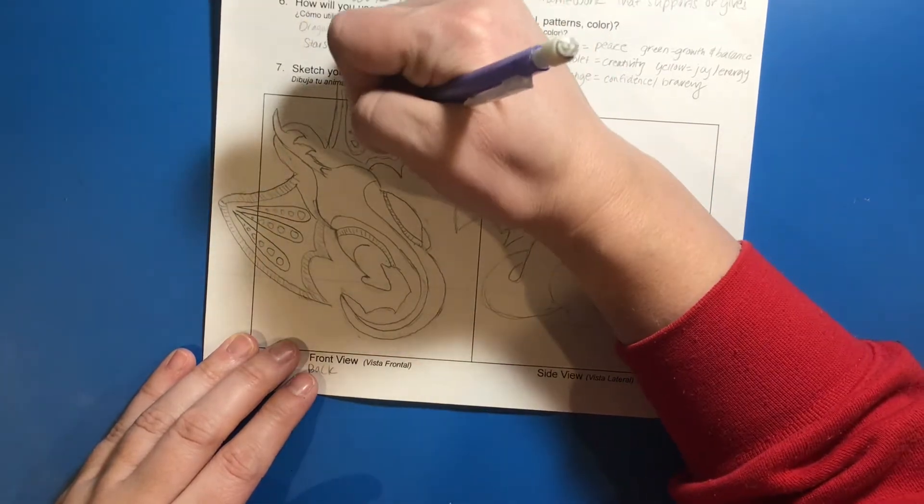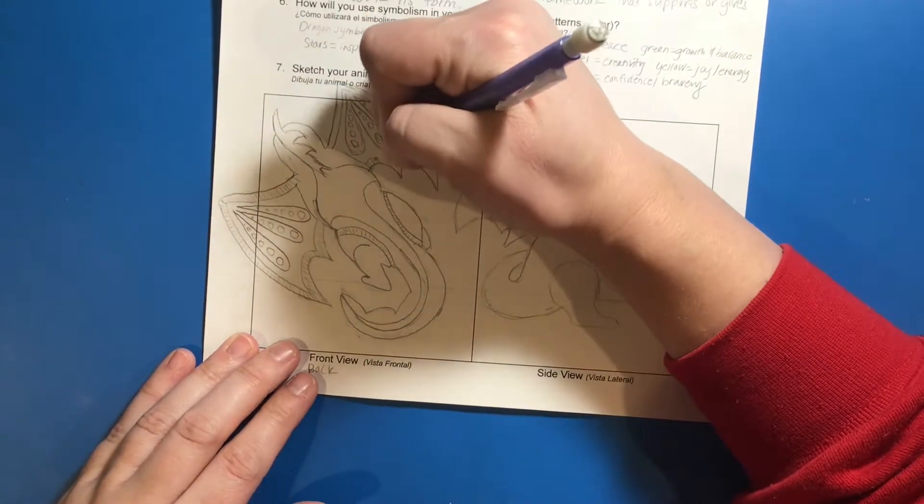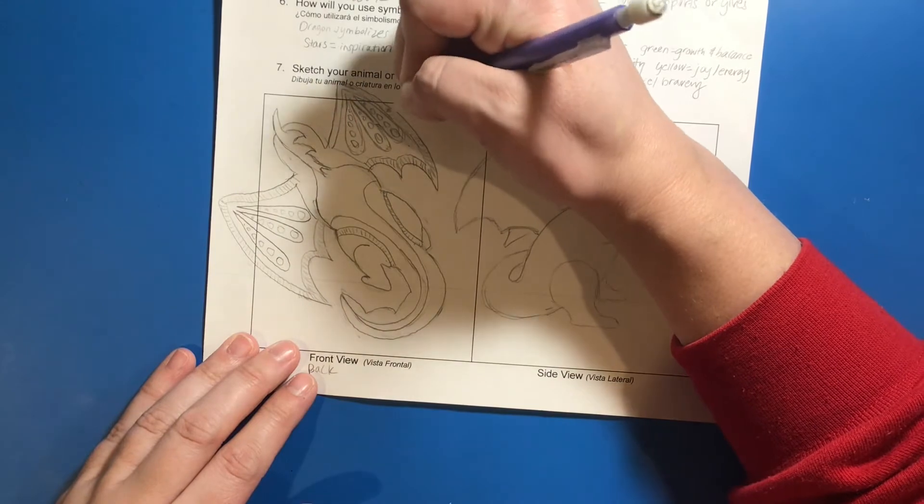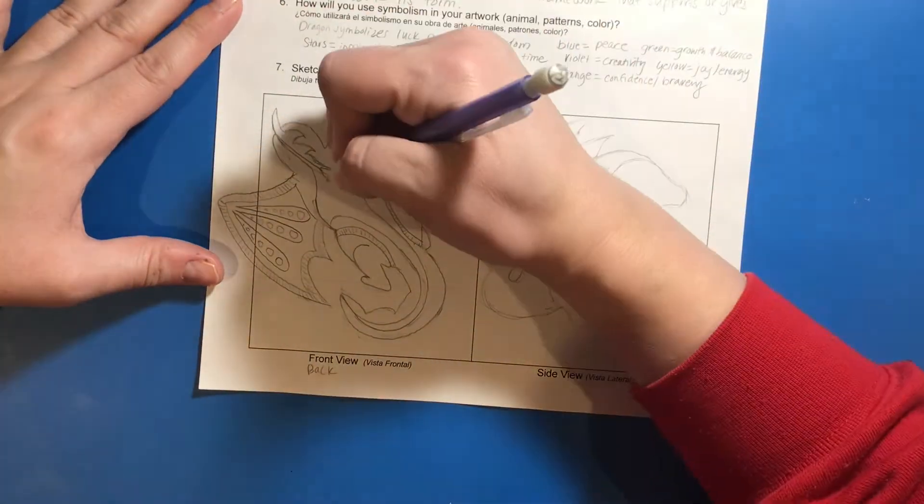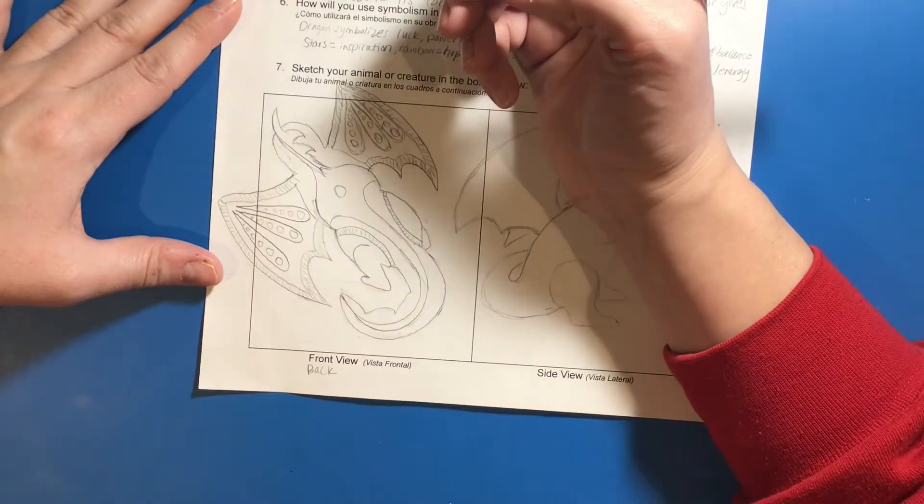then start thinking about what kinds of patterns or designs you would add to your creature. Now remember, if you want to include any of your symbolism through your patterns, be sure to include those into your designs.